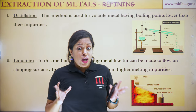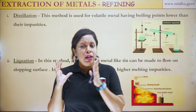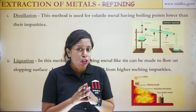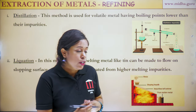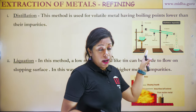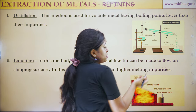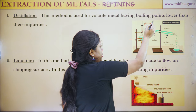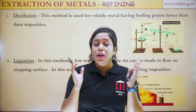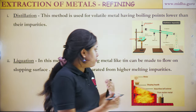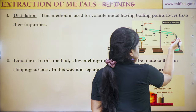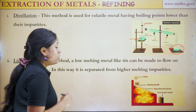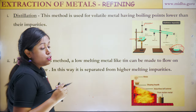The first refining method is distillation. This method depends upon the difference in boiling points of the metal and its impurities. If the metal is volatile and has a lower boiling point than its impurities, we use distillation. The metal with impurities is heated — since the metal has a lower boiling point it vaporizes first, passes through a condenser, becomes liquid, and is collected as pure metal.